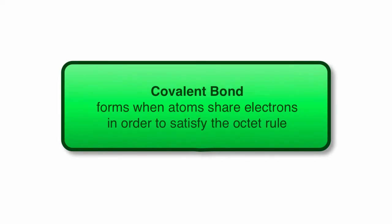A covalent bond is formed when atoms share electrons in order to satisfy the octet rule.